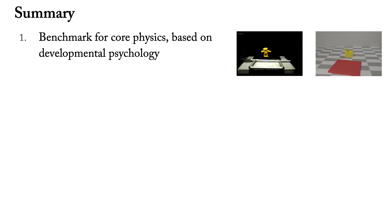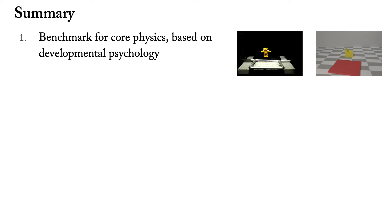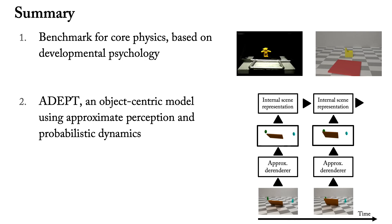In summary, we introduced a new benchmark based on developmental research to test core physics, the ADEPT model that recognizes implausible events using approximate perception and probabilistic dynamics, and we carried out a quantitative model comparison to human judgments. This approach highlights the importance of object-centric representations for generalizable physical scene understanding.